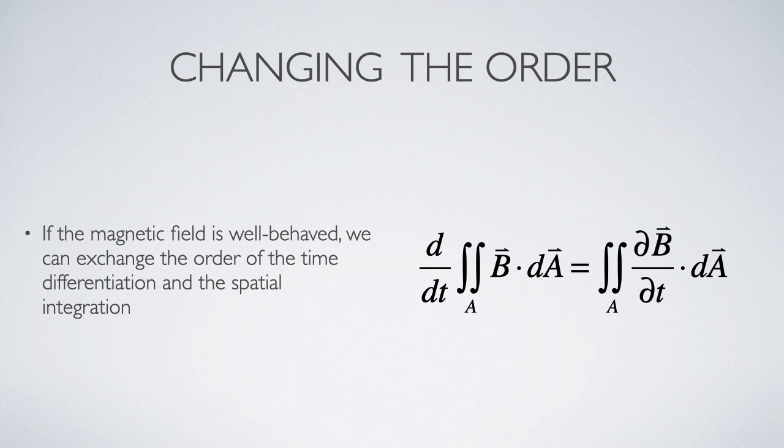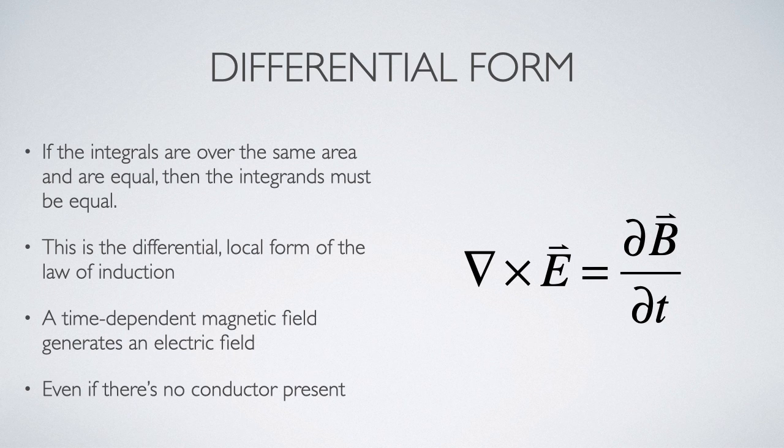Now if I equate that back to the Kelvin Stokes theorem applied to the path integral of E, what I end up with is two integrals over the same surface A that are equivalent to each other. And the only way those two integrals can be equivalent to each other is if the integrands are equivalent to each other.